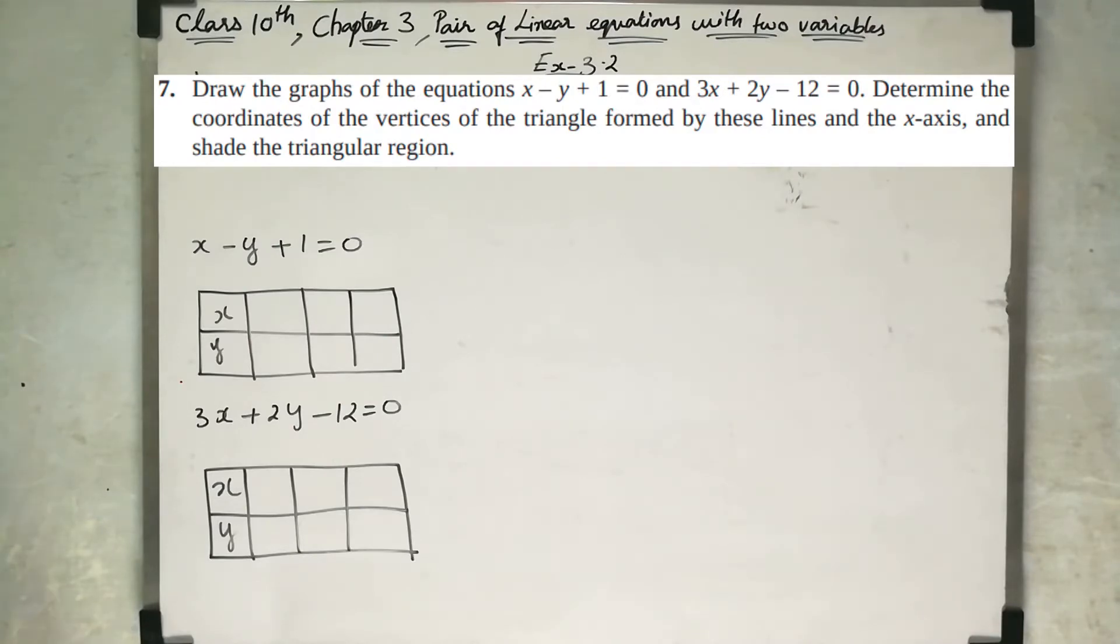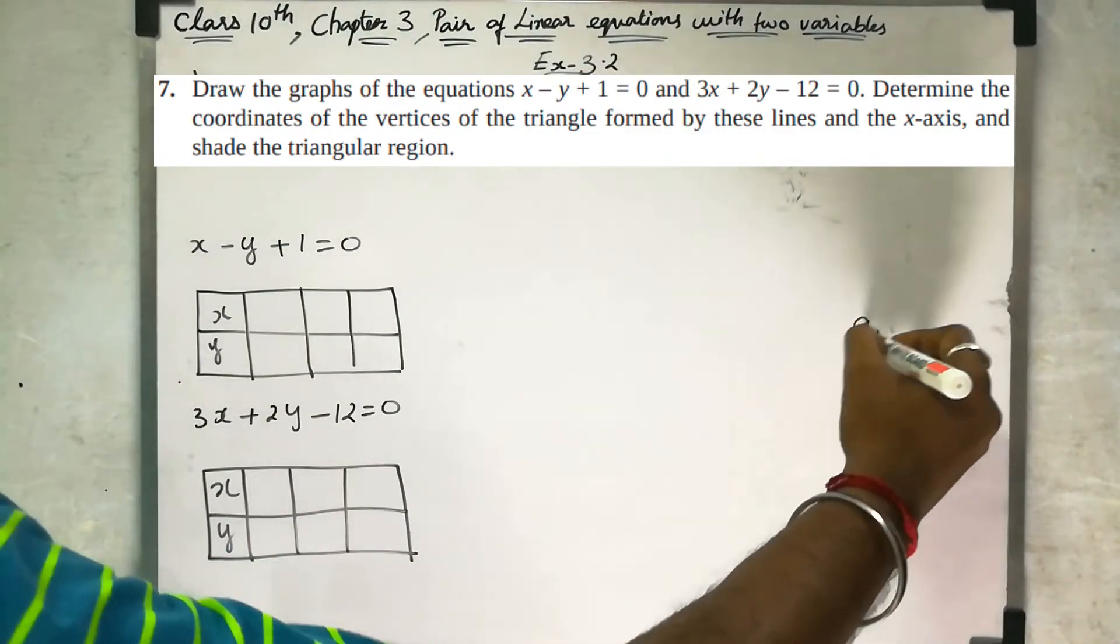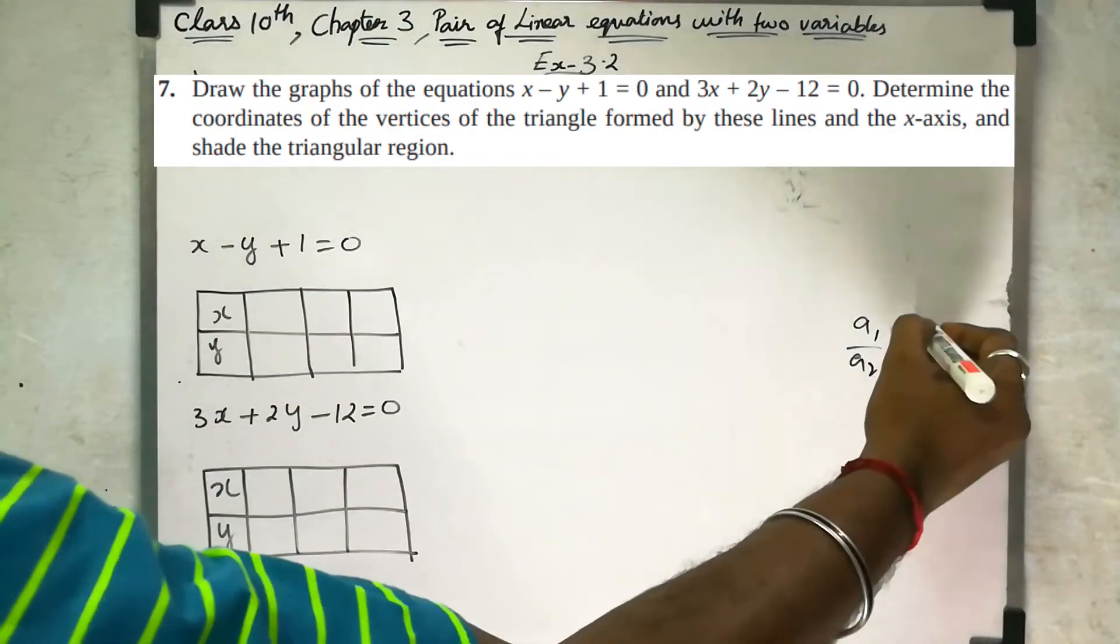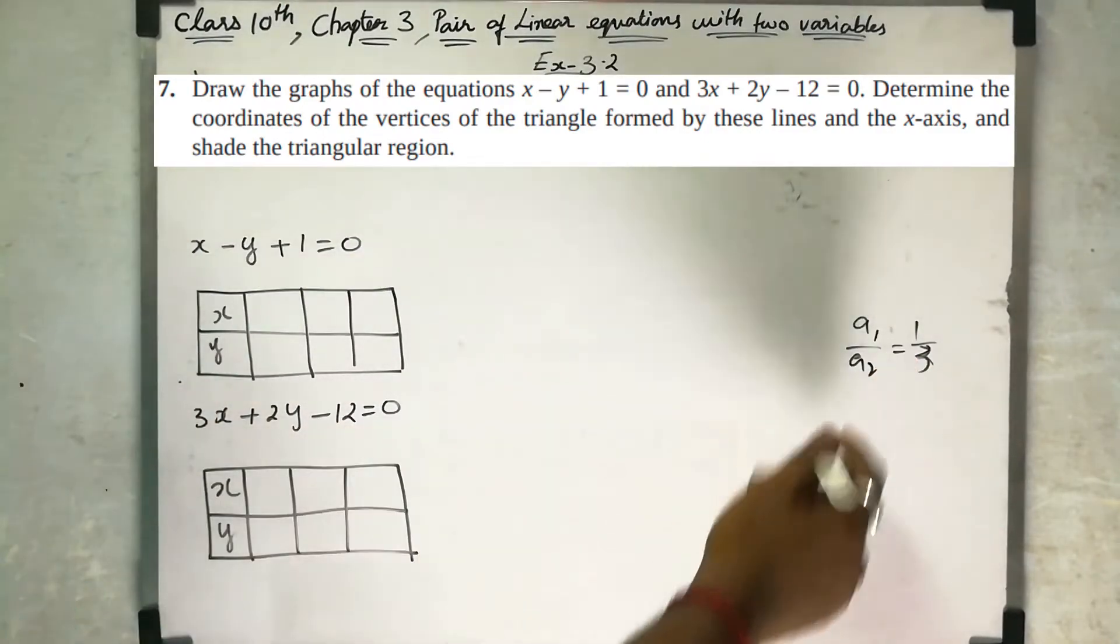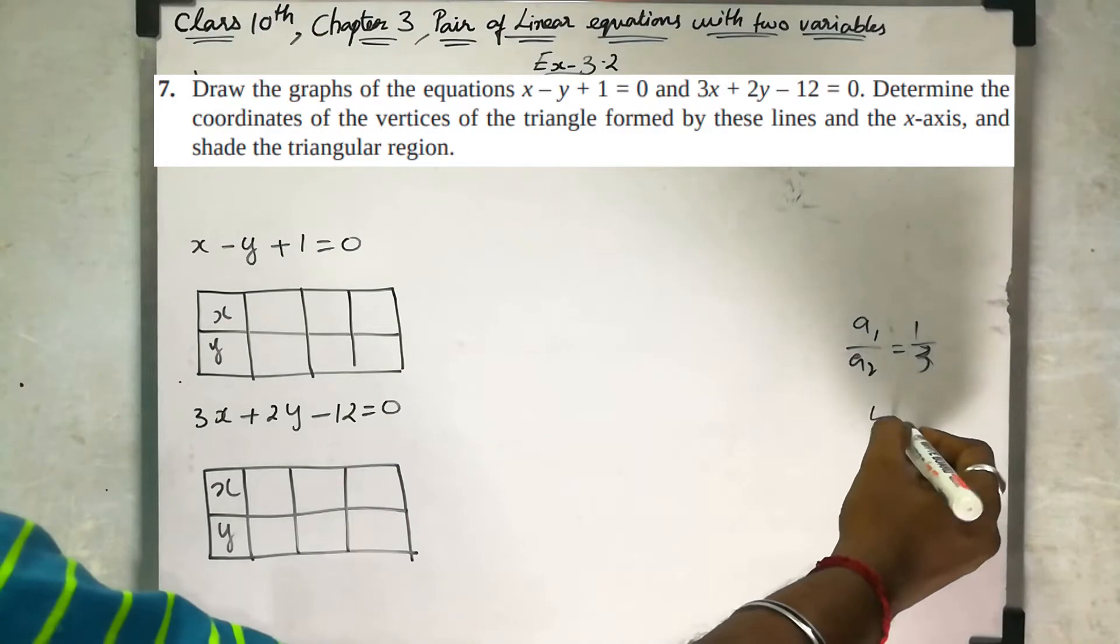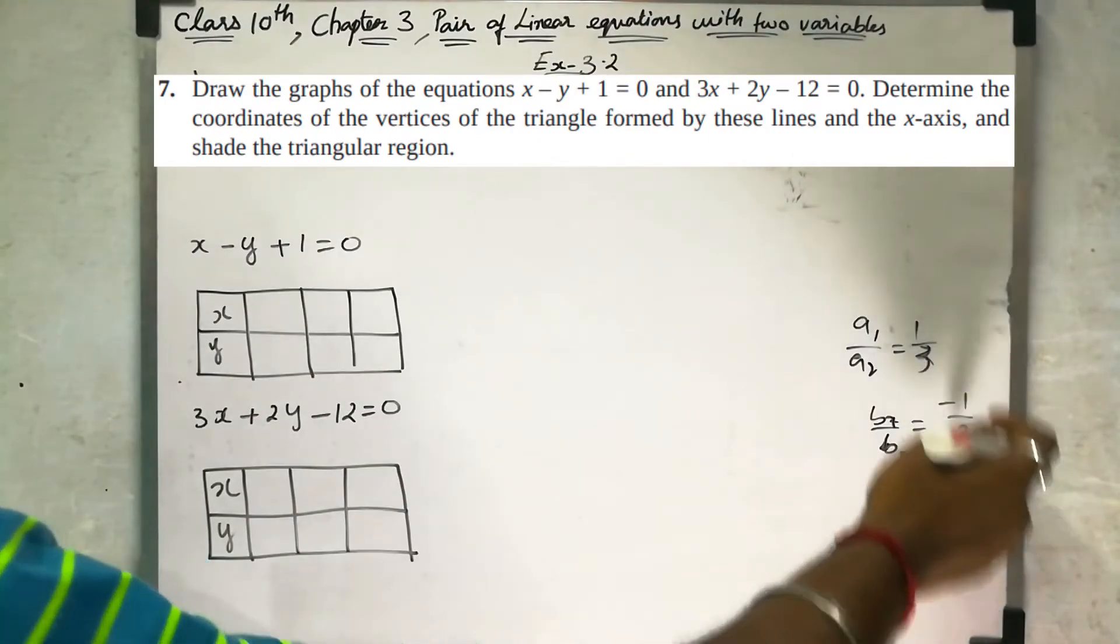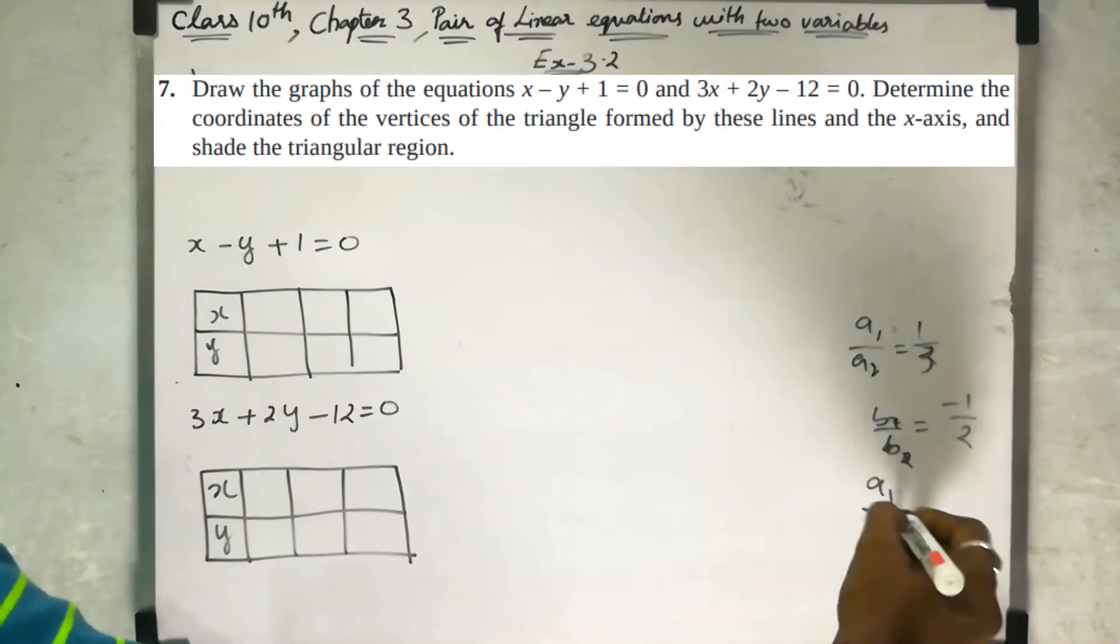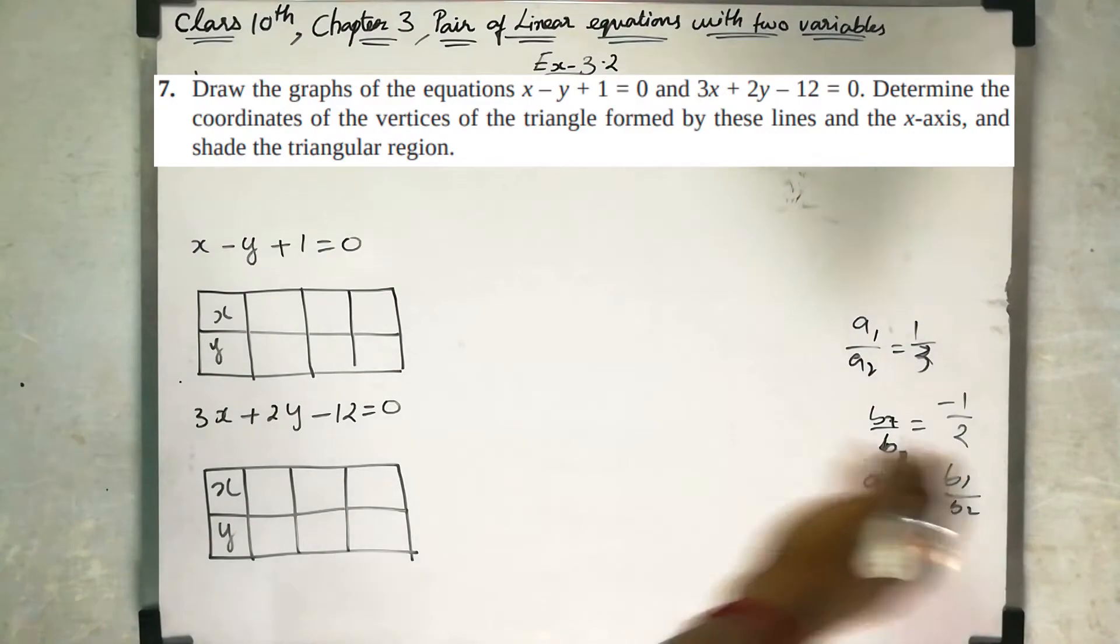If we get the equation, we get the points. For the values, every first part here, a1 by a2 check: a1 by a2 equal to, this coefficient is 1, this coefficient is 3, so a1 by a2 is 1 by 3. b1 by b2 check: b1 by b2 equal to minus 1 by 2. So a1 by a2 is not equal to b1 by b2, so the graphs will intersect.